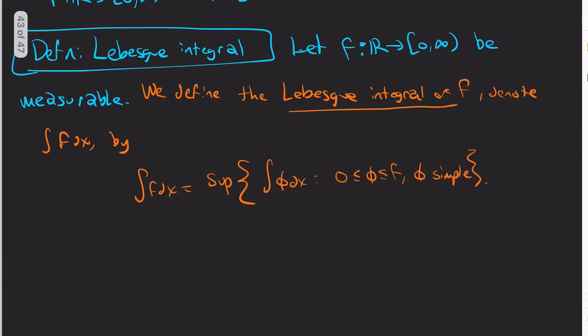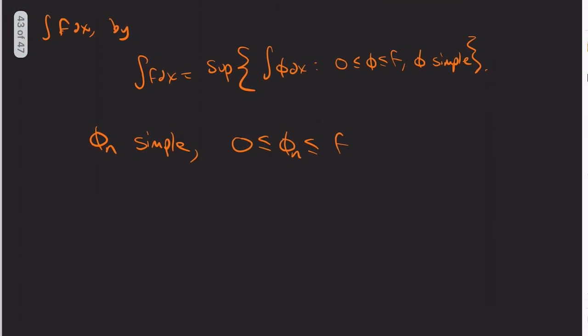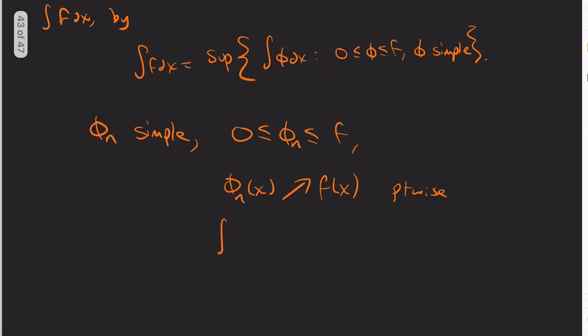So a natural question is: can I find phi_n simple with phi_n less than or equal to f, such that phi_n of x increases to f of x pointwise, and the integral of phi_n increases as a sequence of real numbers to this? And I claim yes, and that'll be the main thing.